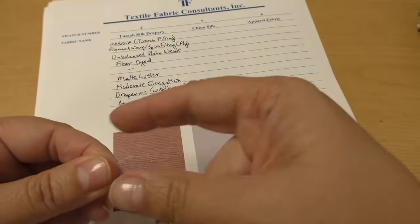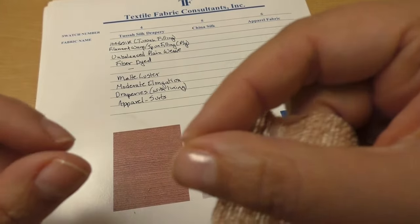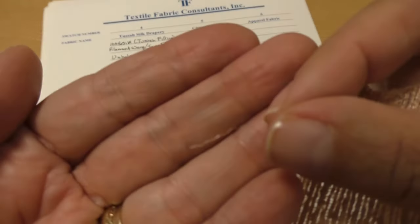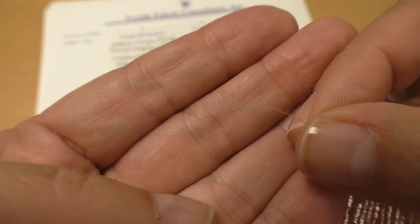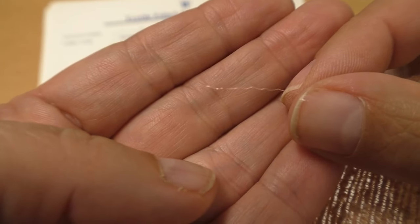So if I pull one of these yarns out, you can see that this is very, very fine, very small, shiny, lustrous and smooth. That is a filling yarn.